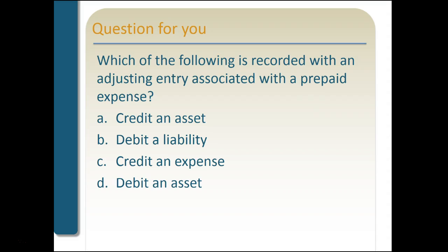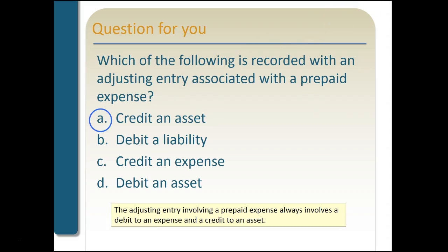Which of the following is recorded with an adjusting entry associated with a prepaid expense? Options: credit an asset, debit a liability, credit an expense, or debit an asset. Think about prepaid insurance — when it is used up, we reduce that asset by crediting it. The adjusting entry for a prepaid expense always involves a debit to an expense account and a credit to the asset account.